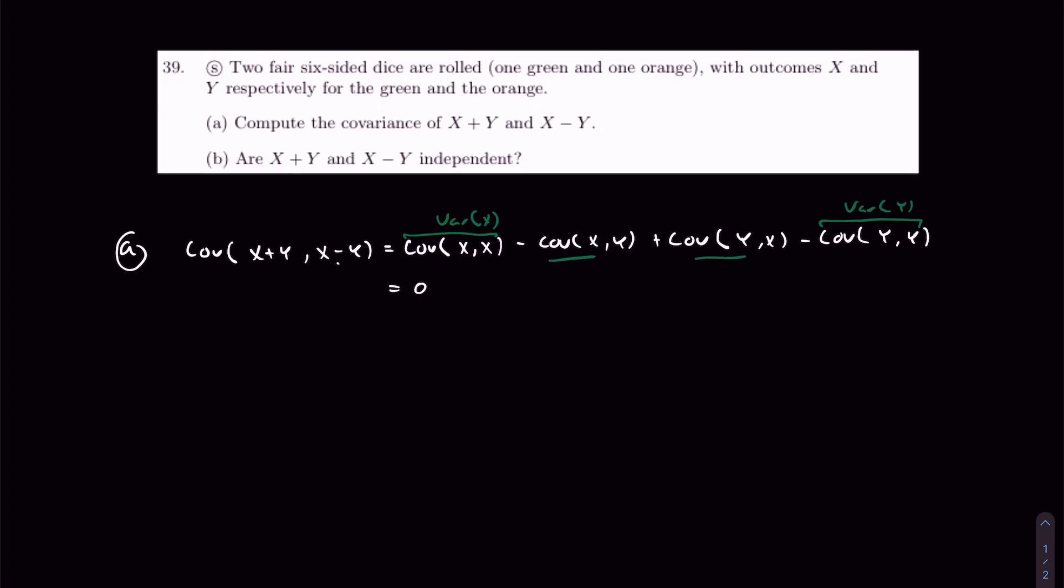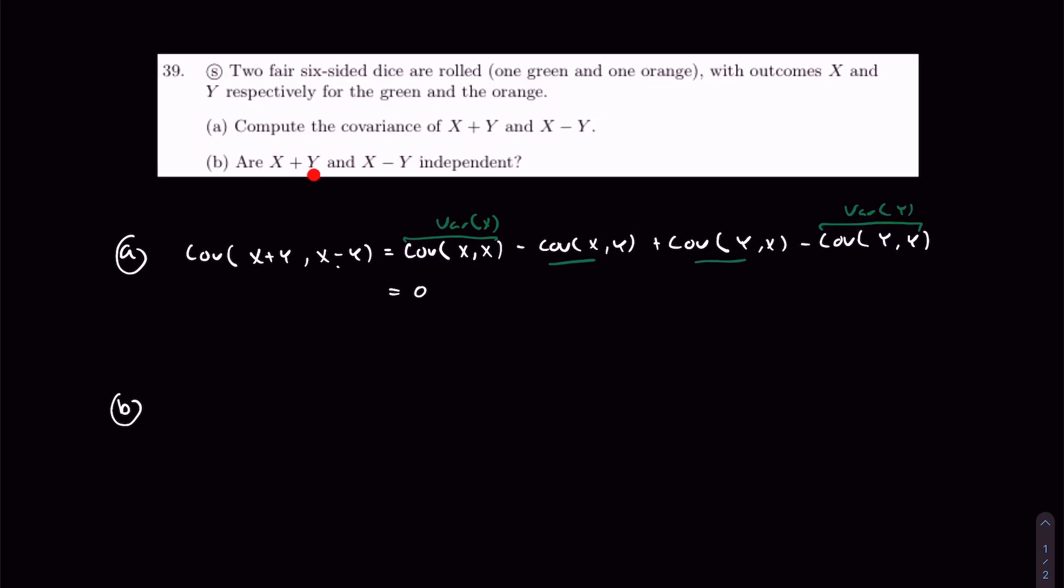Now we are asked whether these two random variables are independent. Because the sum and the difference are just seen as one random variable and another, and they're constructed from the same random variables, there seems to be a good hunch that the two variables aren't independent.